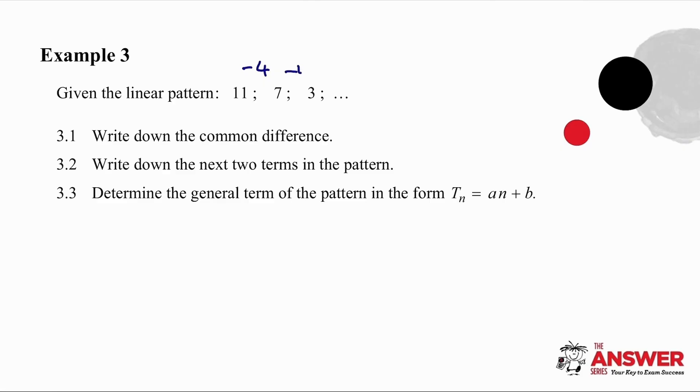When the numbers decrease, it's very important that you attach a negative to the difference, otherwise it doesn't work. So the common difference now is negative 4. Each term drops off by 4, so the next term will be negative 1, then it will drop off by 4, and the next term will be negative 5. So we can continue our pattern like that.